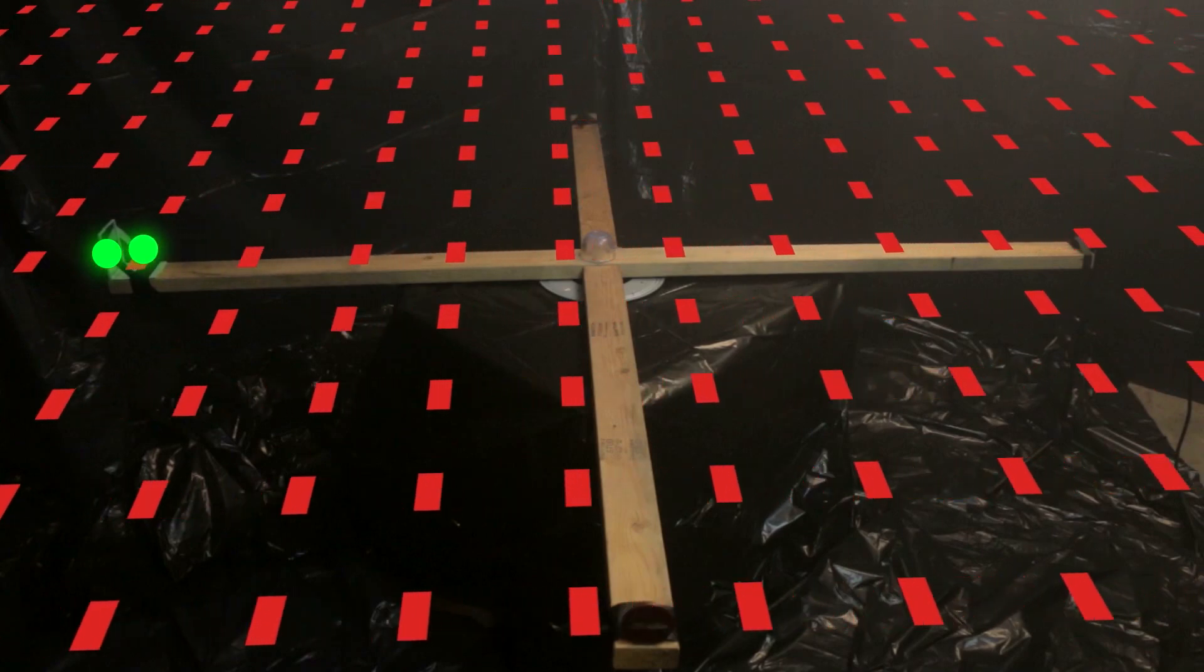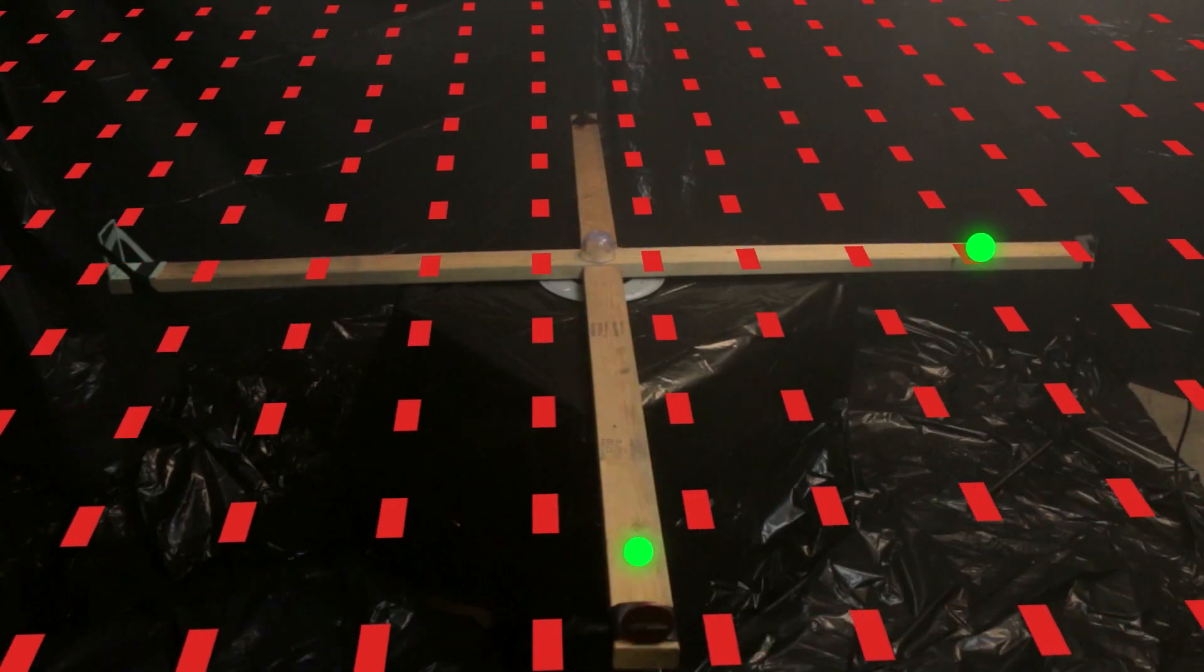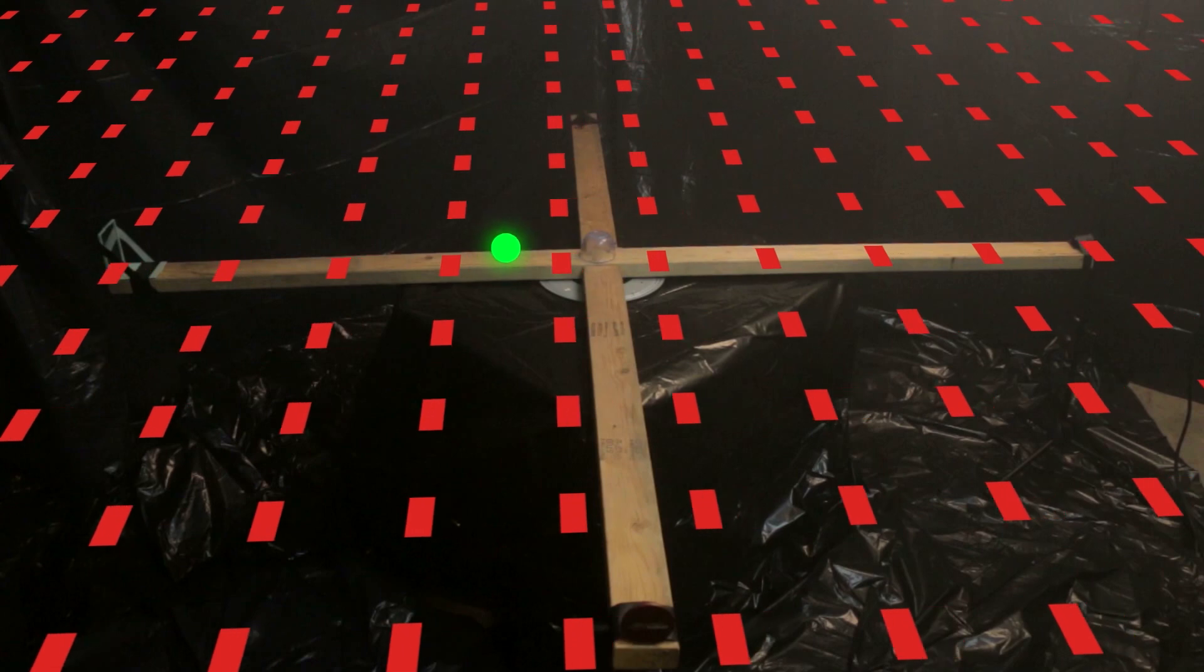But when this experiment was actually done, the interference pattern wasn't shifted over, indicating that nothing was causing the light to move slower. Light, therefore, didn't need a medium. In any given reference frame, light wouldn't go slower because the thing it was traveling through had its own motion, because the thing it was traveling through was empty space, which doesn't have any motion. It just is. And so the speed of electromagnetic waves traveling through empty space also just is.